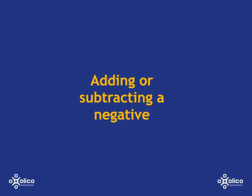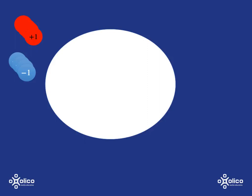We're going to have a look at adding or subtracting a negative. We're going to use a scenario to help us make sense of this. In this scenario, you've got to imagine that that big white thing is a pot, those red circles are hot disks, and the blue circles are cold disks.